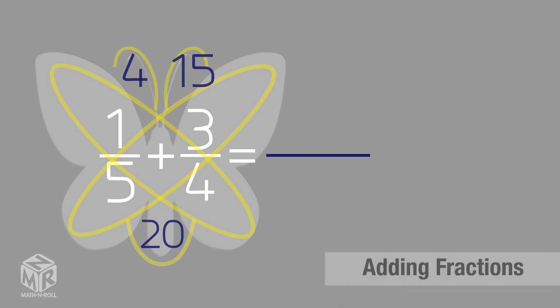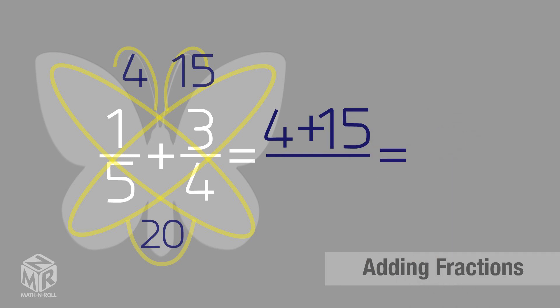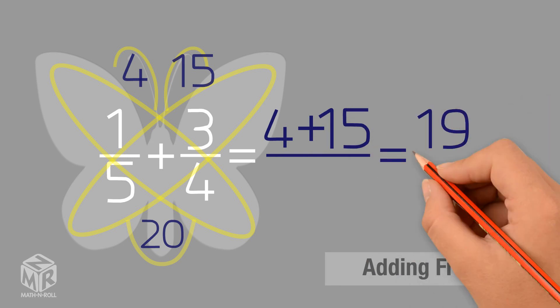Now we add the numbers in our antenna. 4 plus 15 equals 19. We put the 19 in the numerator. The number in the body, 20, is our denominator. So 1 over 5 plus 3 over 4 equals 19 over 20.